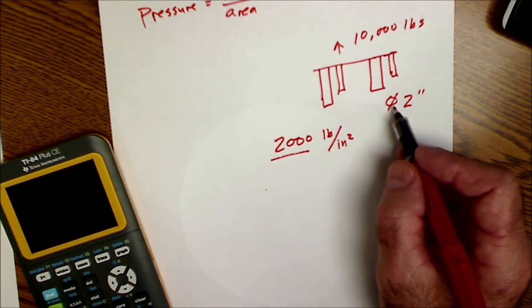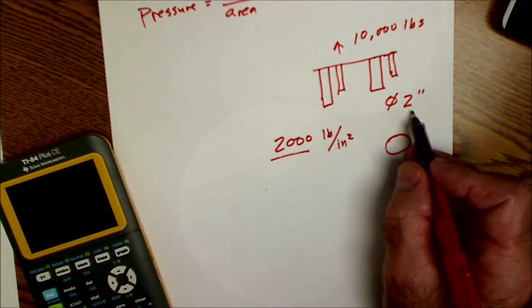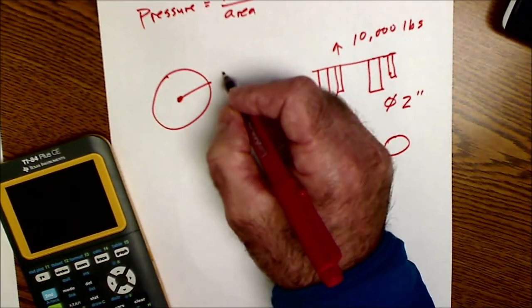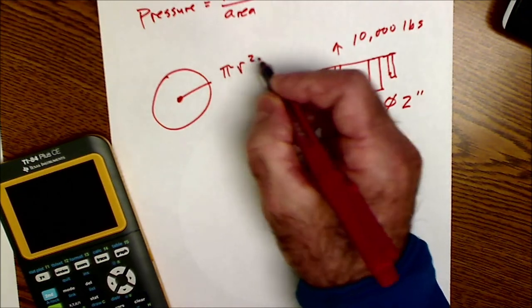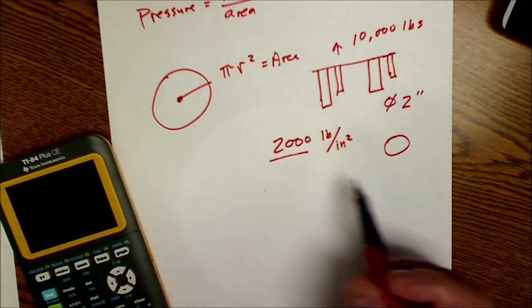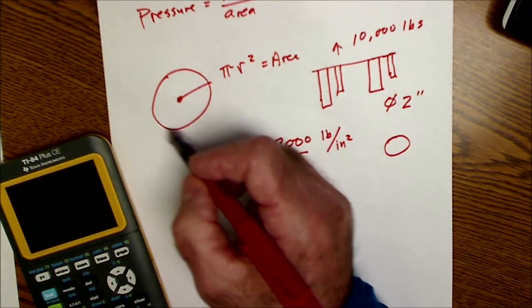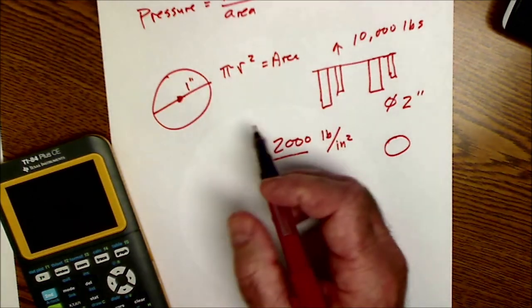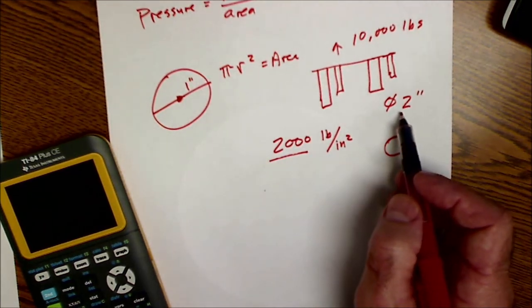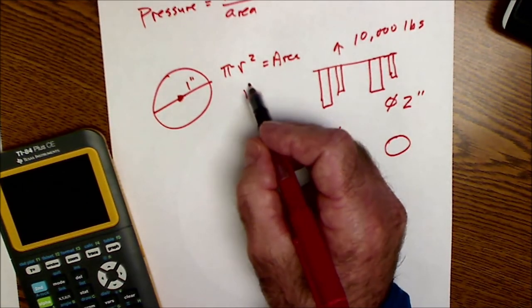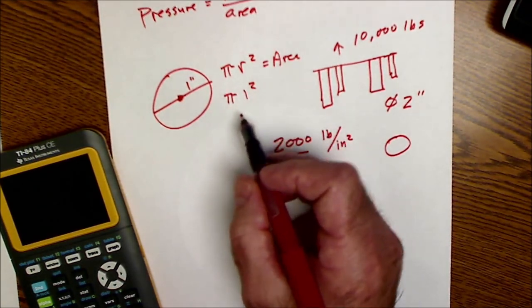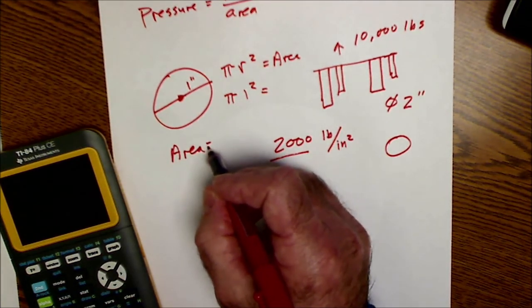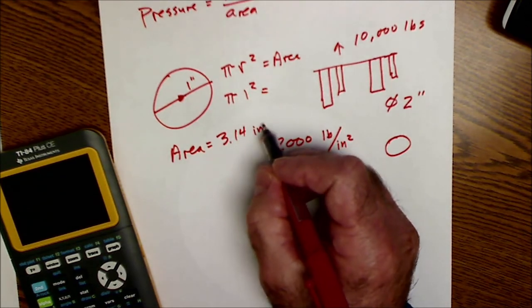So the first thing I really need to figure out is the area of a 2 inch diameter cylinder. So area of a circle is pi r squared that's equal to area. If my cylinder is a 2 inch diameter that means 2 inches straight across then the radius is 1 inch. So the area of that 2 inch diameter piston is 1 squared times pi. Pi is just a number 3.14. So every cylinder has an area of 3.14 square inches.